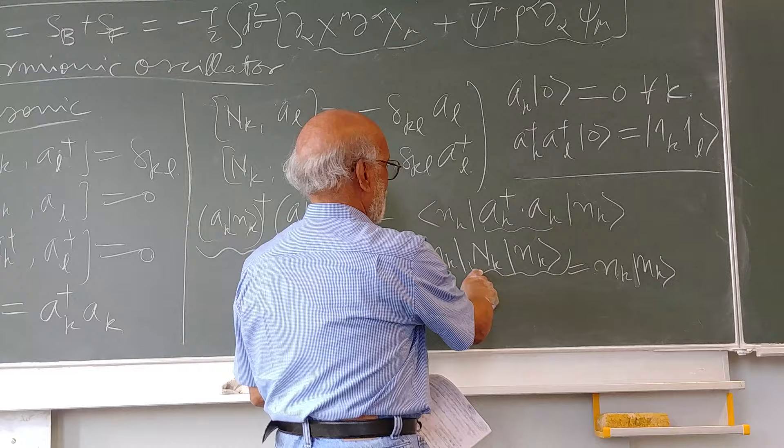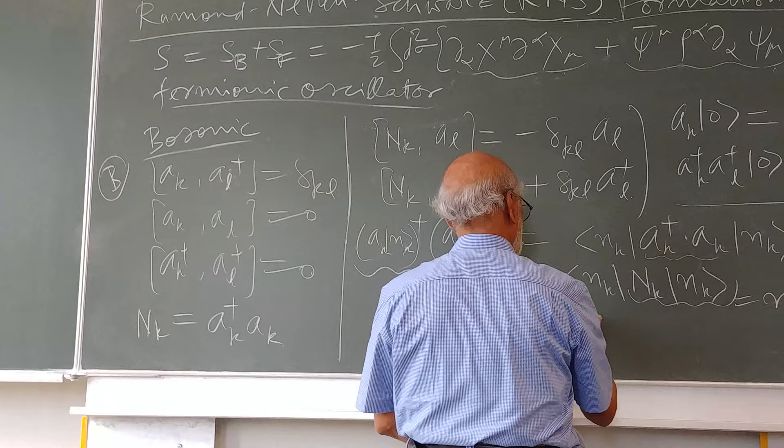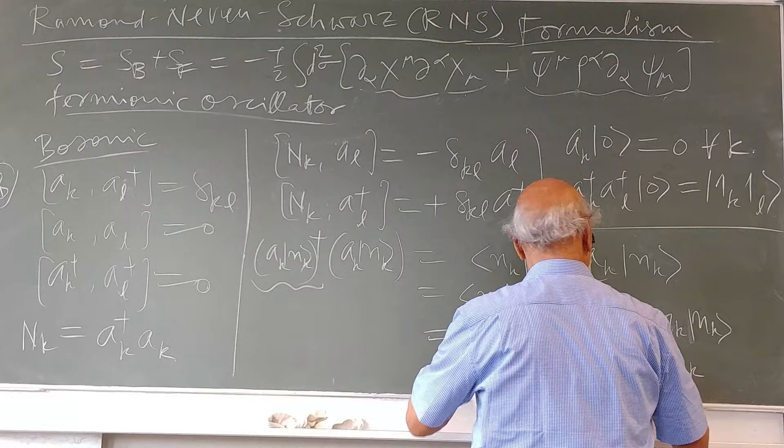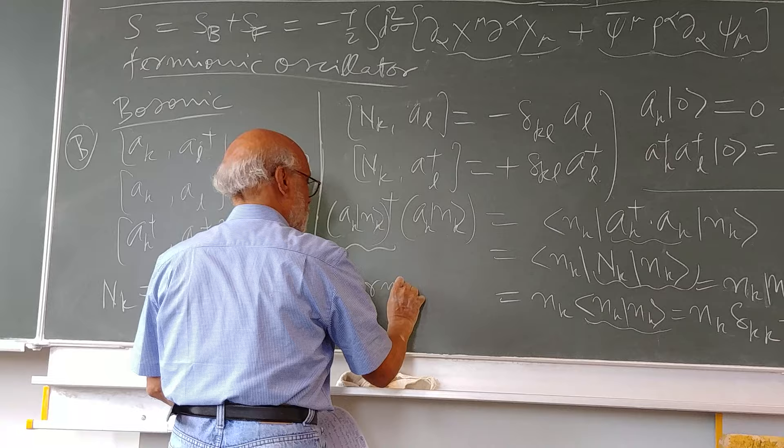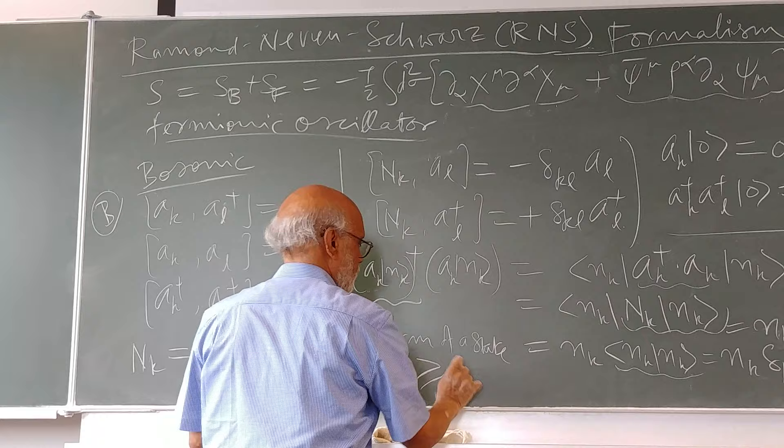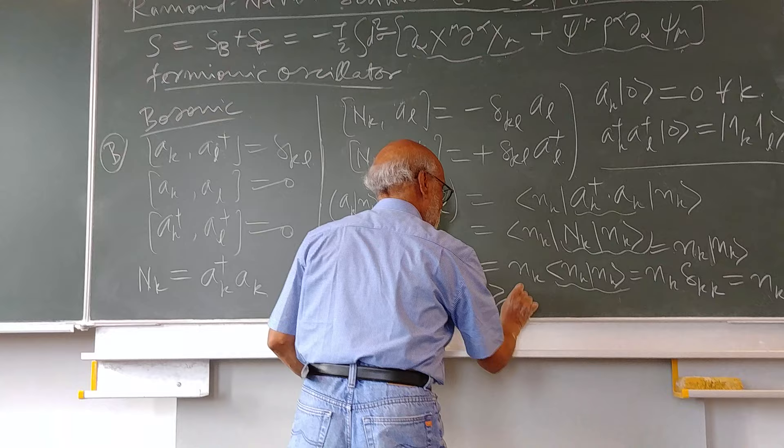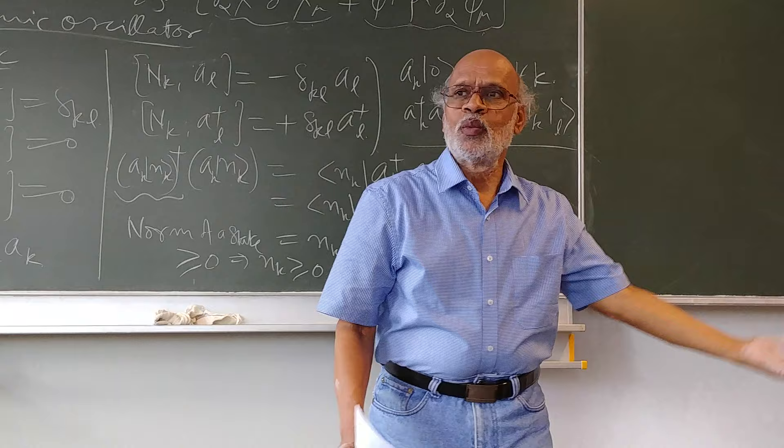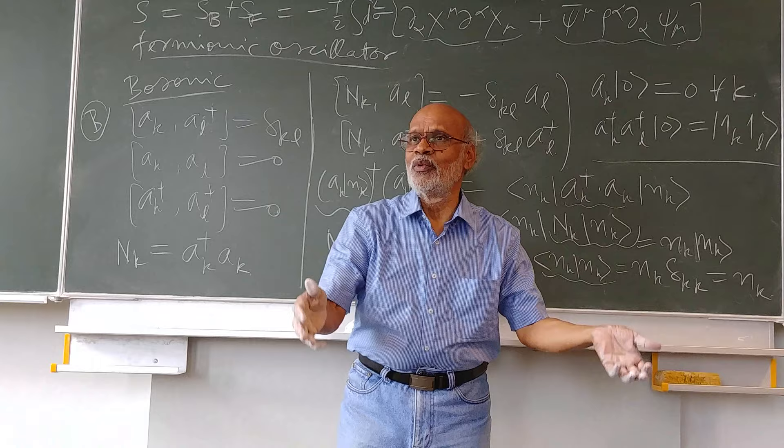Here what you get is Nk times Nk, Nk. This is the norm of the state, it has to be positive definite, and this implies that Nk is greater than or equal to 0, and in particular it can have value 0, 1, 2, 3 all the way up to infinity. What it means is that infinitely large number of identical particles could stay in the same quantum state.